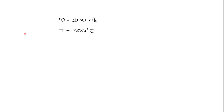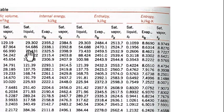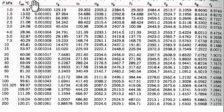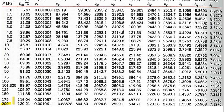For our first problem, let's identify all the properties of fluid water at 200 kilopascal and a temperature of 300 degrees C. Going to the saturated water pressure table, I'll look down the pressure column until I find 200 kilopascal. It has a saturation temperature of 120.21 degrees C. But the temperature we're after is 300 degrees C, which is much greater than that. That suggests the state of this system is actually a superheated vapor.